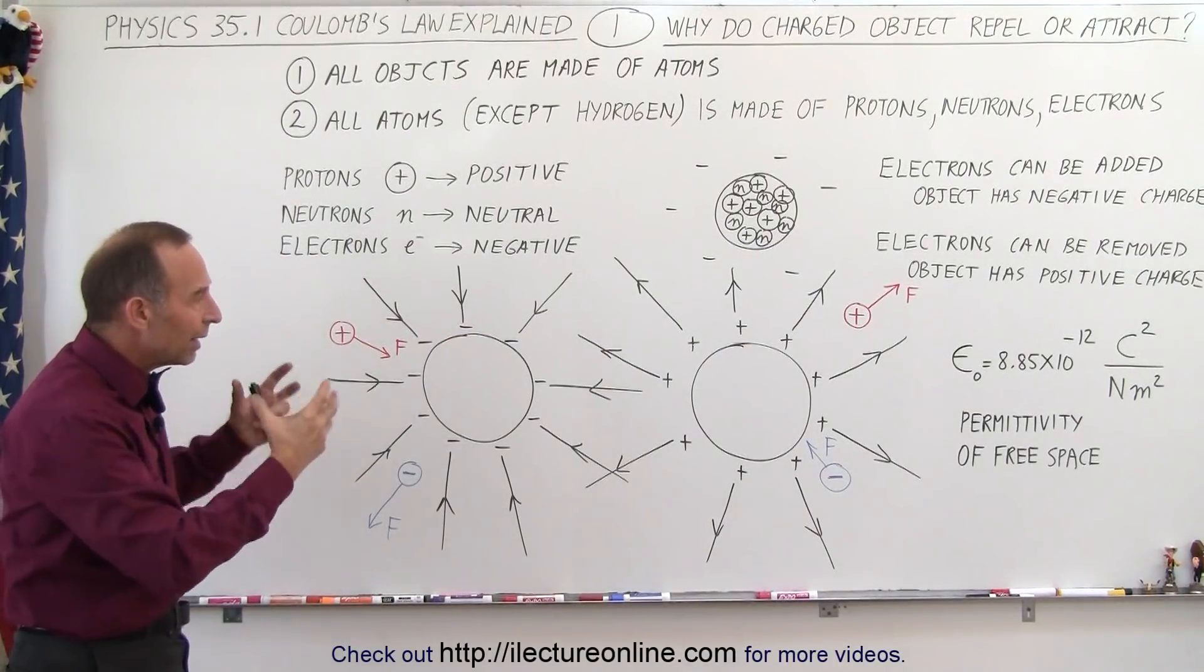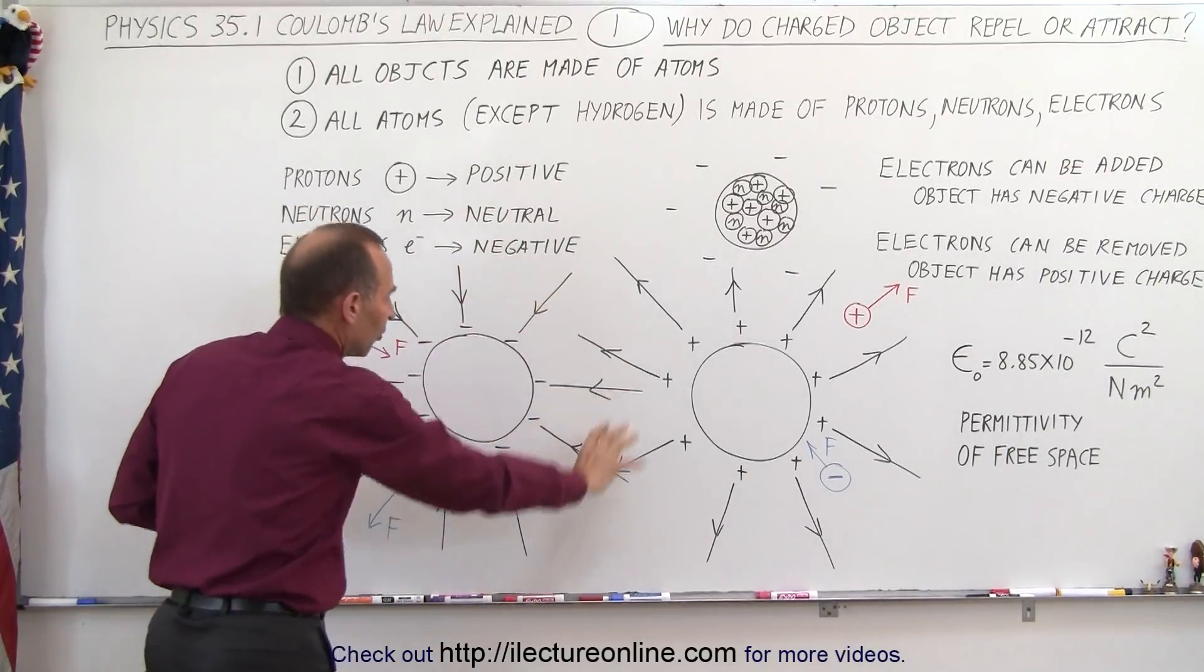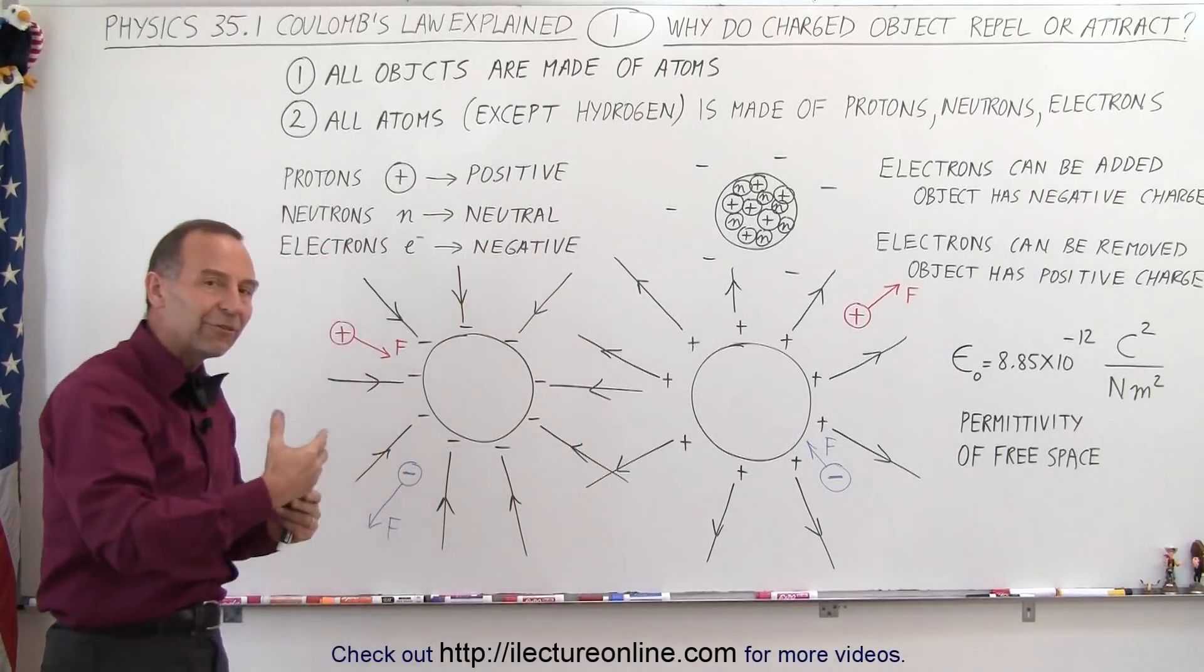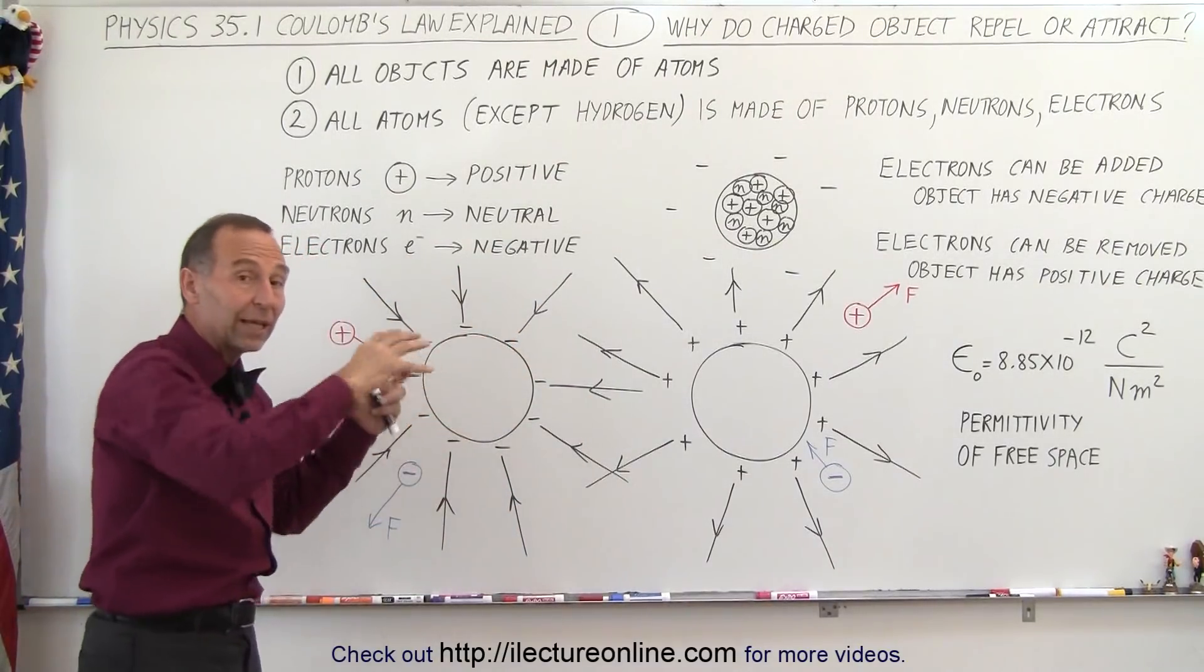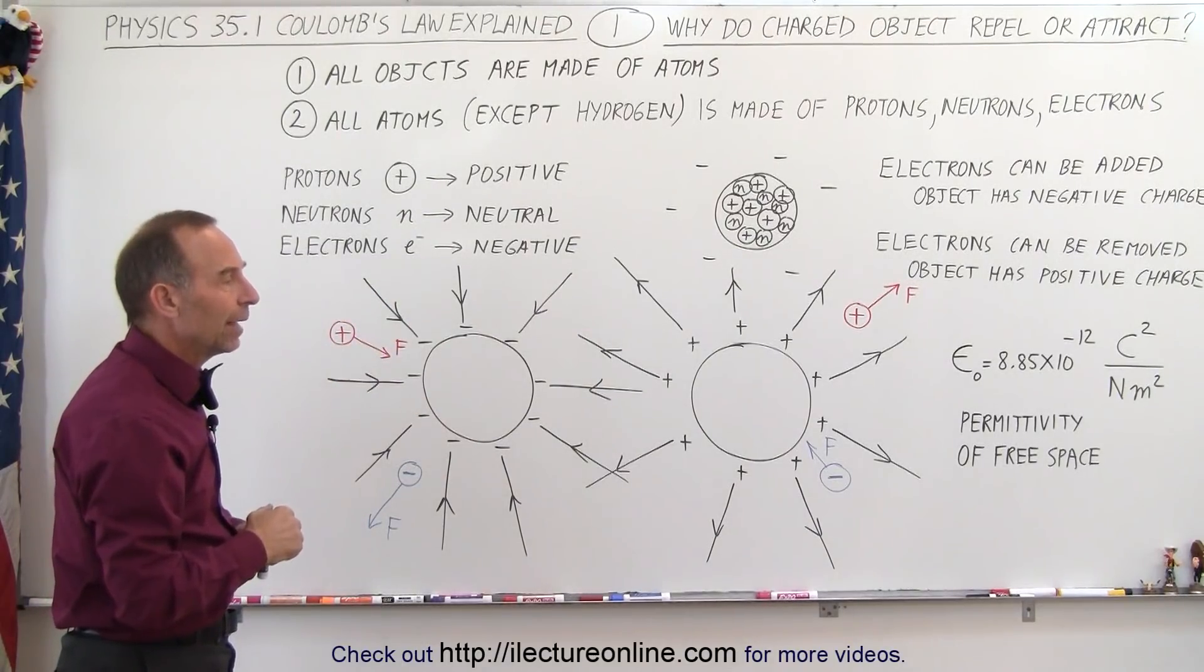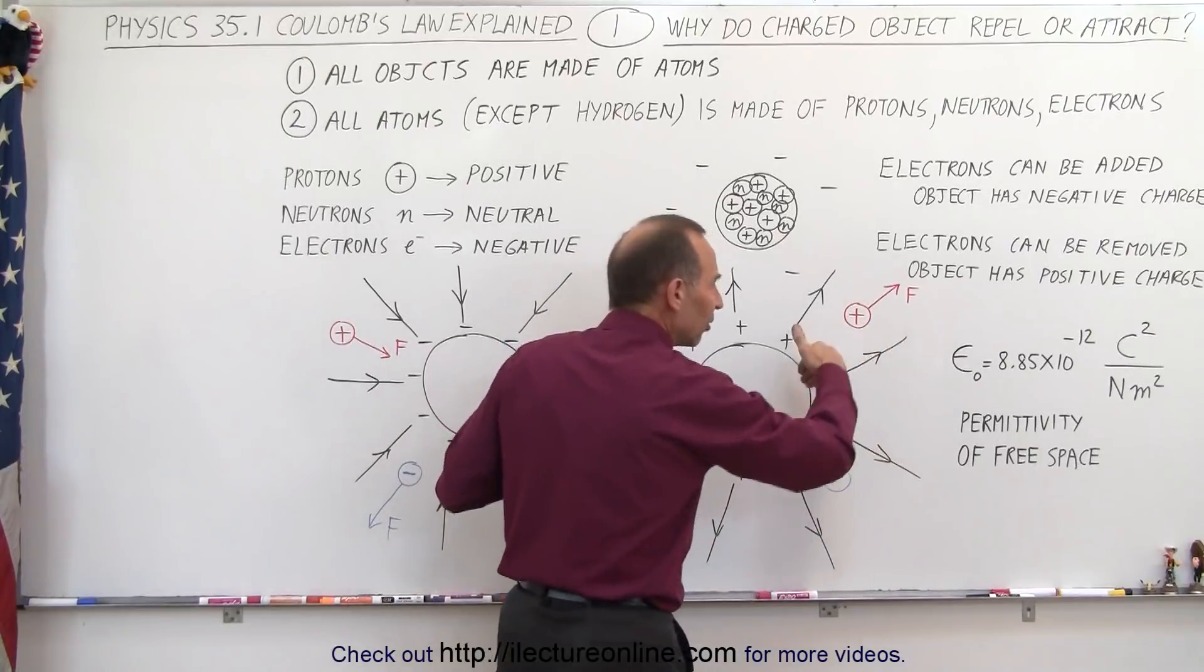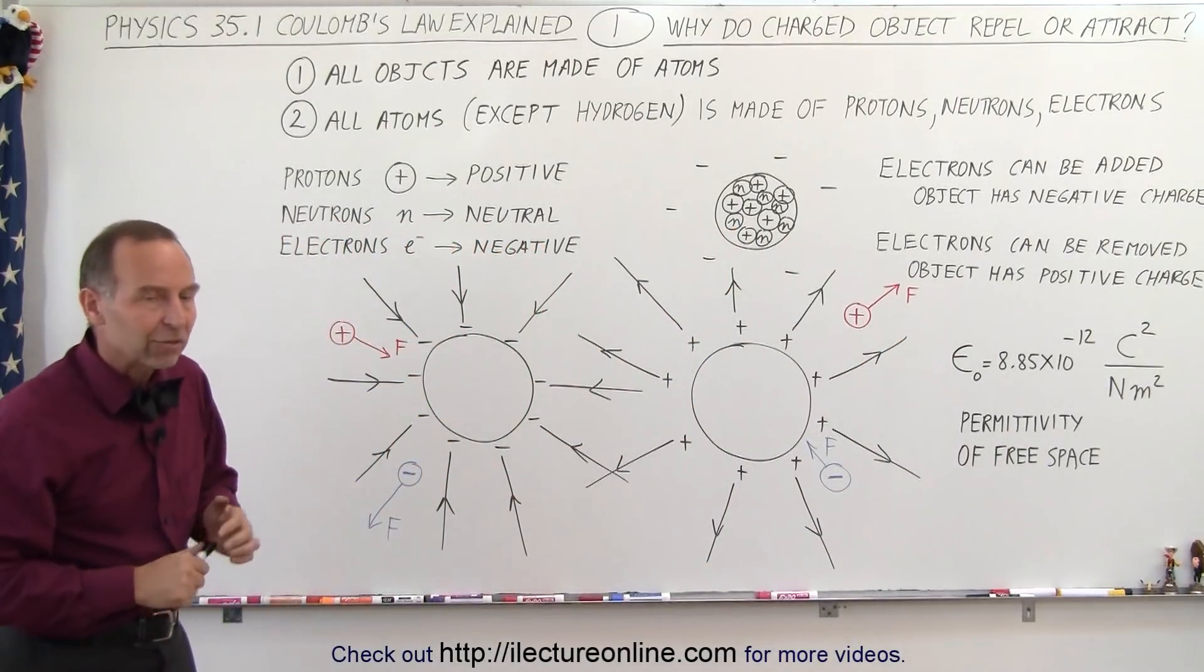And so the reason why they repel or attract one another is because charged objects influence the sphere around them in such a way that other objects that come within that sphere of influence will either feel that force of attraction or repulsion. Because the way the first object with that excess or lack of negative charges will affect the region around it. And so what that means is it affects the construct of space around the object in such a way that the other object either gets pushed away or gets attracted because of that sphere of influence.